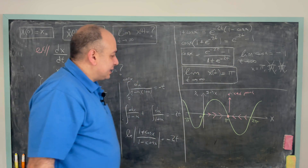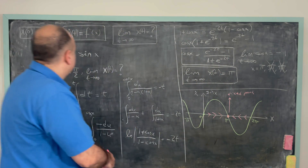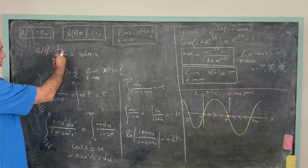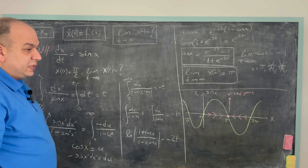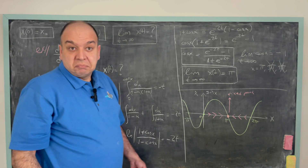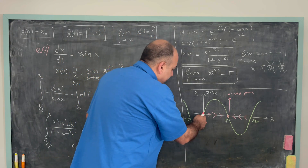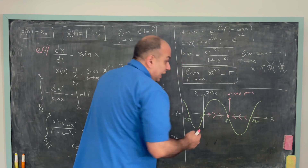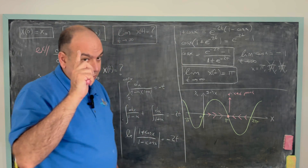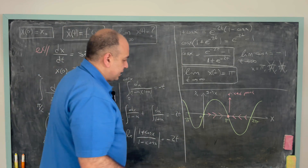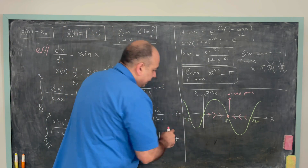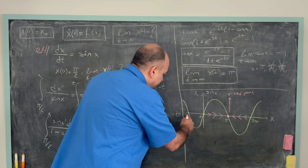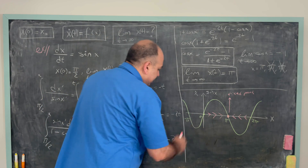One may ask: what about x = 0? When x = 0, sin 0 = 0, so it's also a fixed point. But what's the difference between x = 0 and x = π? Between -π and 0, x-dot is negative.